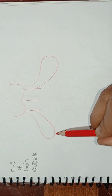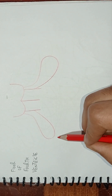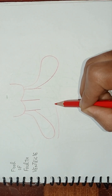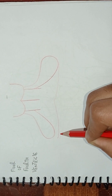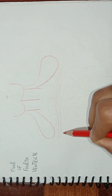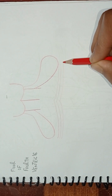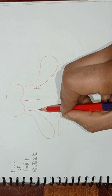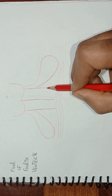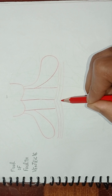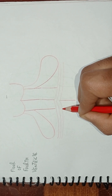These two pointers should be at the same level, and from these two points, below these points, we will draw three lines like this: one, two, and three. Now, we will extend these three lines and join these three lines at this point.